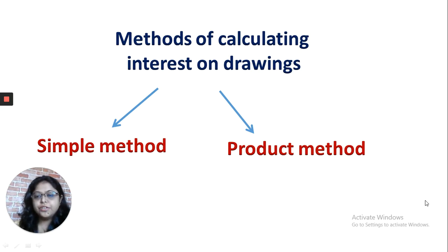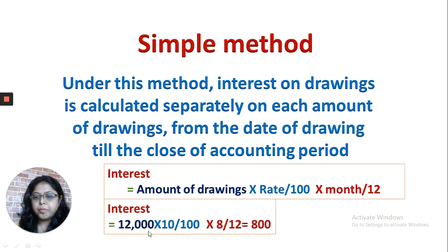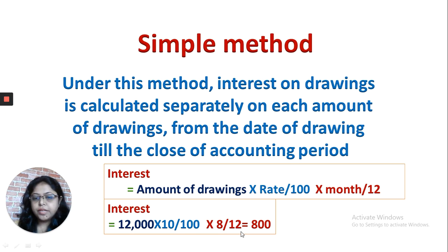There are two methods for calculation of interest on drawings: the simple method and the product method. In the simple method, you calculate interest as: amount of drawings multiplied by rate, multiplied by the number of months the amount has been withdrawn, divided by 12. For example, if 12,000 was withdrawn at 10% and the amount was withdrawn at the end of April, then eight months remain till the end of the accounting year, so you take 8 divided by 12.